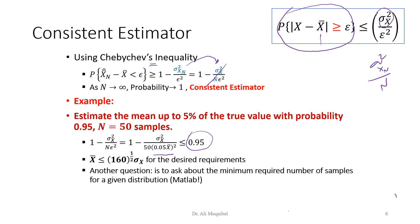Another way to ask the question is: how many samples are required to achieve a given accuracy? You can ask about the minimum required number of samples for a given distribution. You can try this with MATLAB — generate samples, pick 5 or 10, find the average, and as you increase the number of samples you get better accuracy.